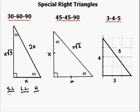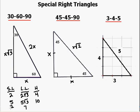If the short leg is 2, the hypotenuse is twice as long — that would be 4 — and the long leg would be 2 times the square root of 3. Likewise, if the hypotenuse has a length of 10, the short leg is half that, so 5, and the long leg is 5 times the square root of 3. If the long leg has a length of 7, the short leg would be 7 over the square root of 3, and the hypotenuse would be 14 divided by the square root of 3. That's the 30-60-90 relationship.